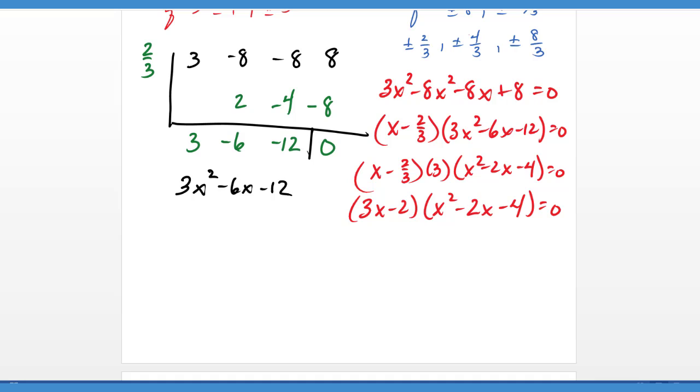So basically what we did here is we pulled out the three from there, and then I went ahead and distributed it to that part over there. It's kind of an unnecessary step, but it gives us a better view of this x squared minus 2x minus 4.